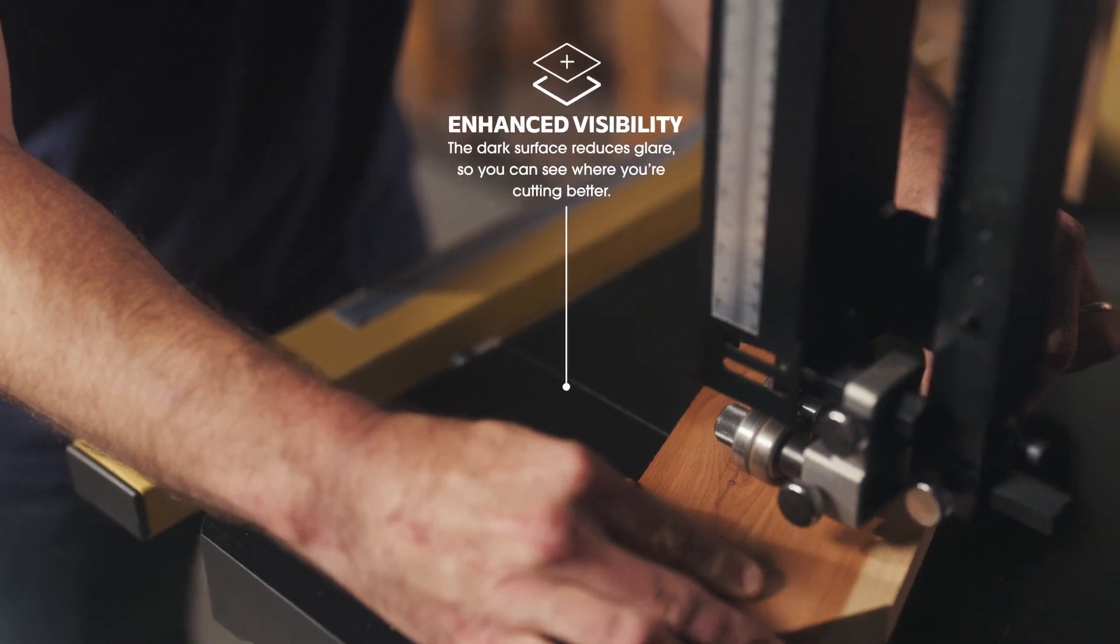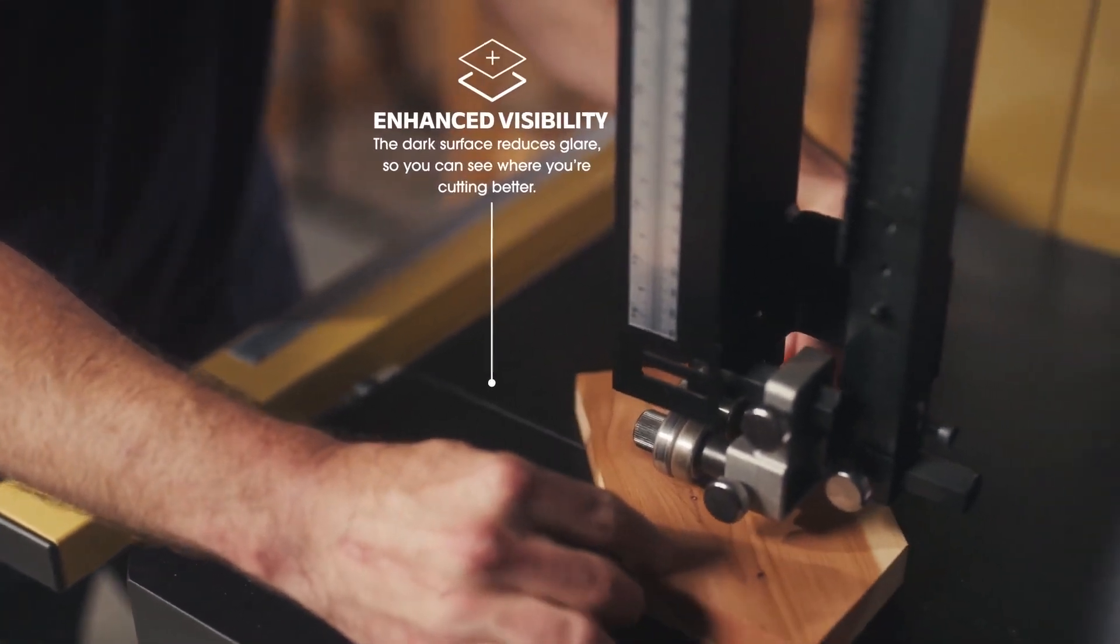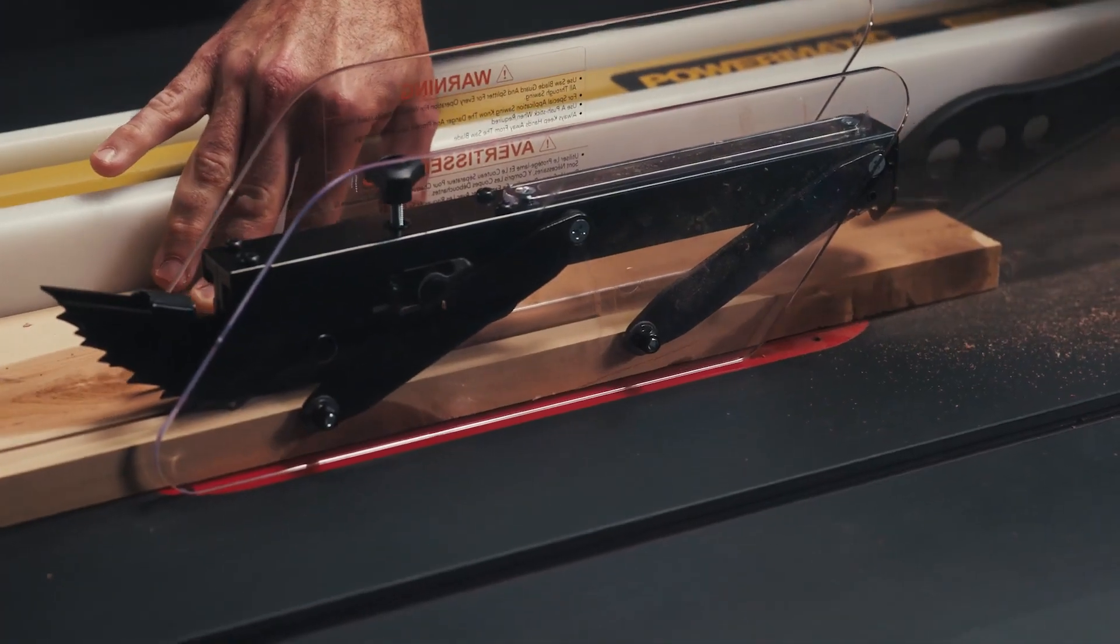And the dark color of the surface reduces glare, improving the contrast between the table and the wood, making it easier to see where you're cutting.